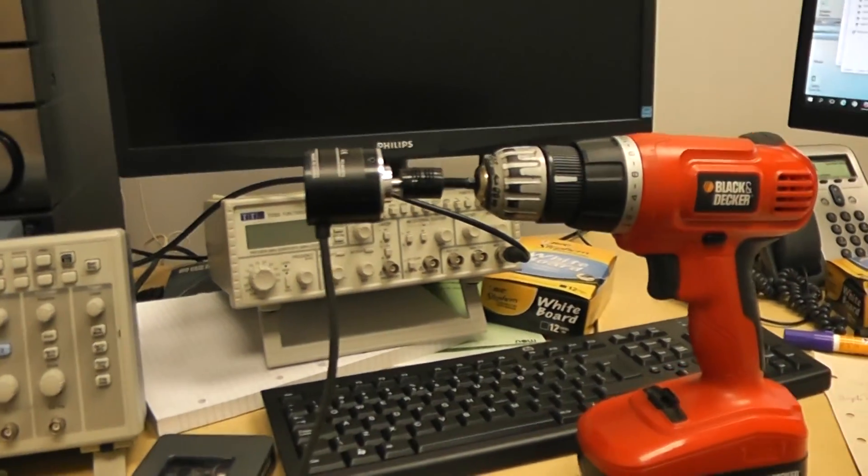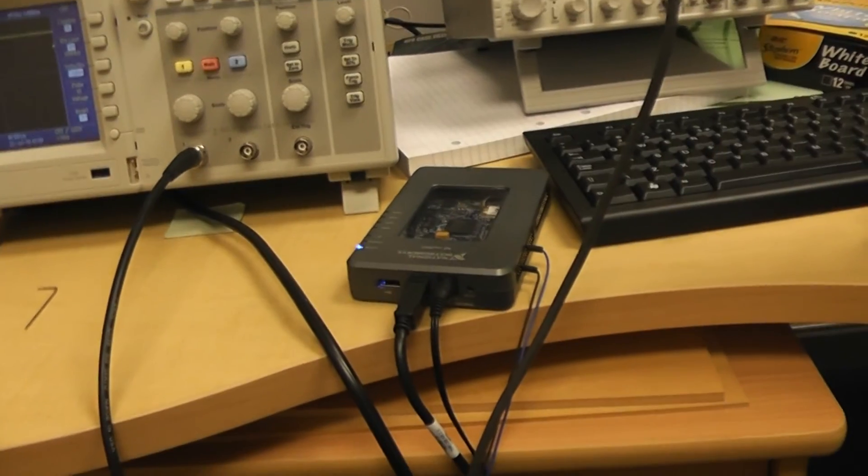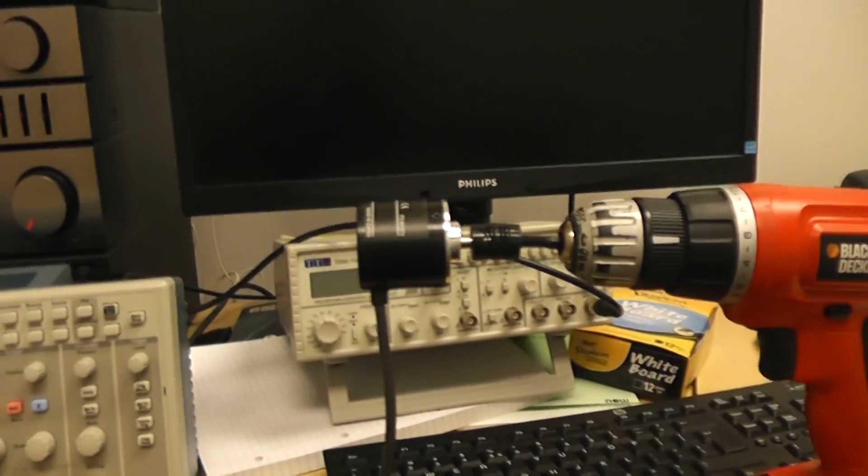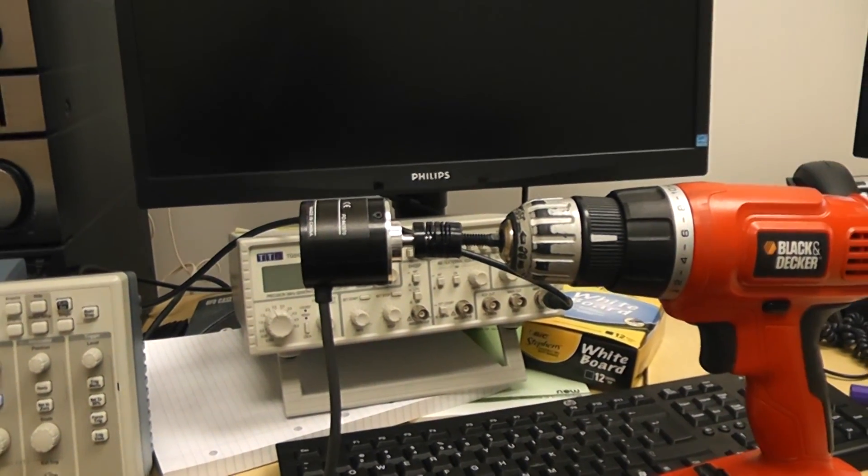But basically, that's how to measure RPM of a motor using a MyRio encoder. It's a quad encoder, but I'm only using one of the outputs. Thank you very much.